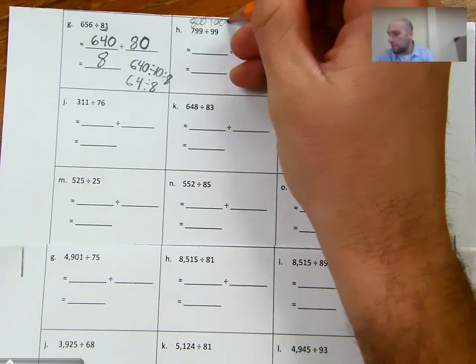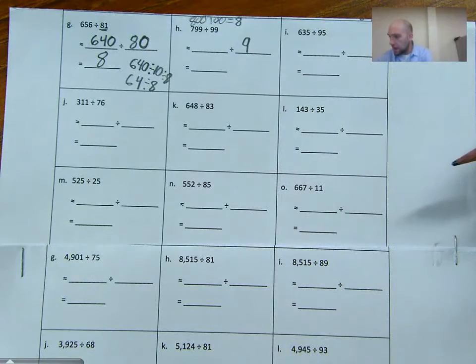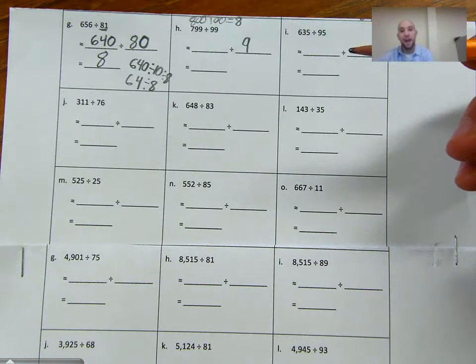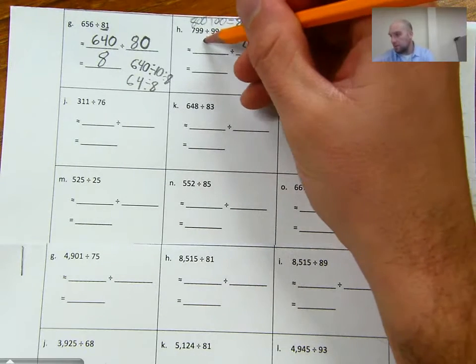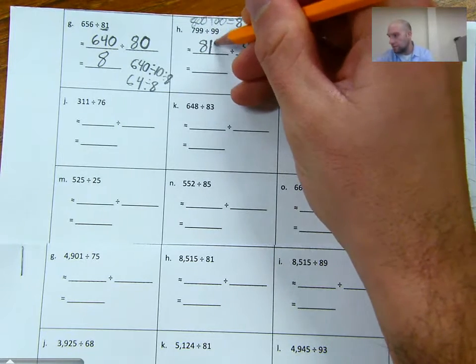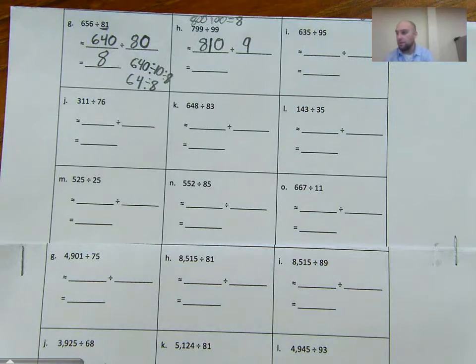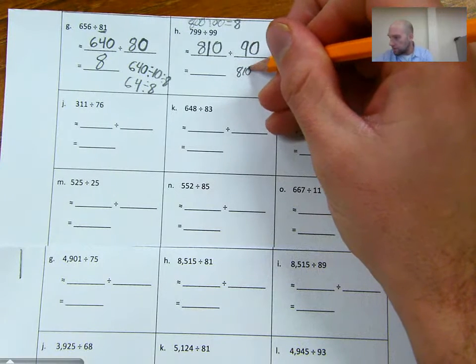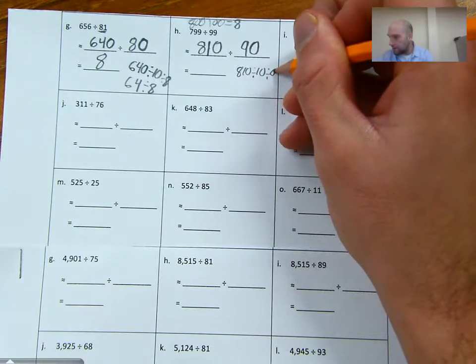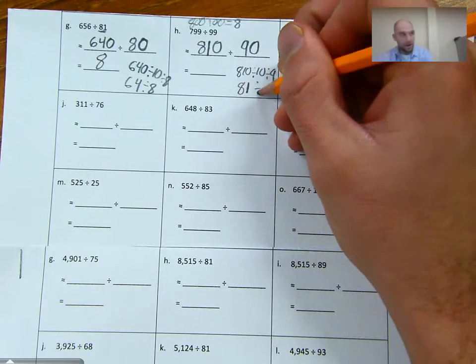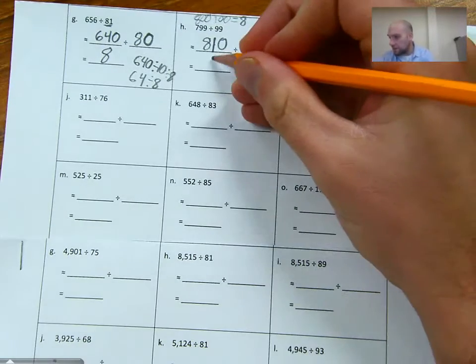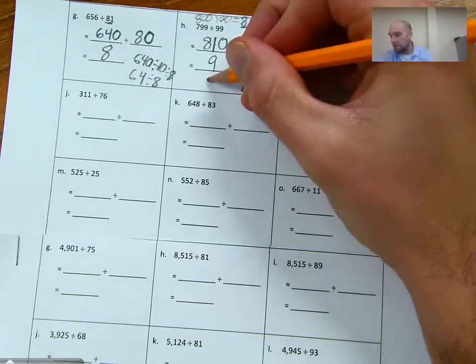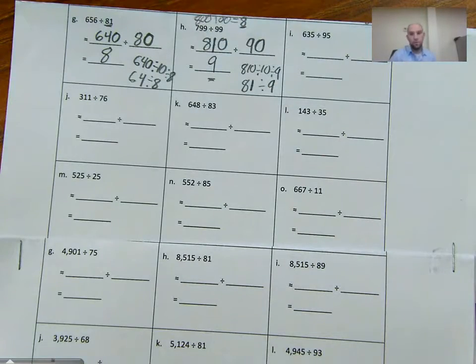But the other way that I could approximate this is I could do, well, I need to find a factor of nine that's close to 799. Well, I know that 81 is a factor of nine. So 810 would be a factor of 90. So I'm going to take 99, I'm going to round down to 90 and I'll take my 799, I'm going to round up to 810. And I'm going to do the same thing. I'm going to take 810 divided by 10 divided by nine. And then I get 81 divided by nine. And 81 divided by nine is nine. So here I might've got the answer eight, but here I would get the answer nine. We're still pretty close. Both of those would be reasonable estimates.